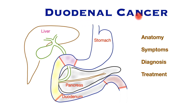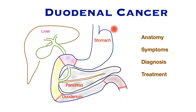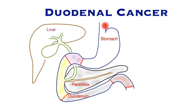The focus of this video is duodenal cancer. The duodenum is the continuation of the stomach and has a C-shaped configuration. We will learn about the types of duodenal cancer, the anatomy, risk factors and symptoms, diagnosis and treatment.